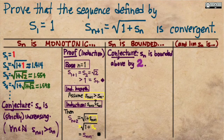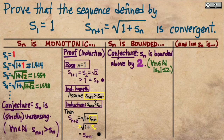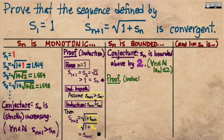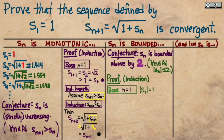The form of this proof — because it's a statement quantified on all natural numbers, namely that for all natural numbers n, |sₙ| ≤ 2 — will proceed again by induction, with the base case being n equals one. Is it true that |s₁| ≤ 2? Yes, because the absolute value of the first term equals 1, which is less than or equal to 2. So the base case is established.